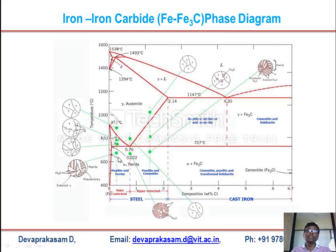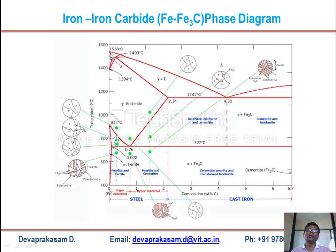There are various melting points. The alpha phase has a melting point of 912°C. The gamma phase melting point is about 1394°C, and the delta phase has a melting point of about 1538°C.